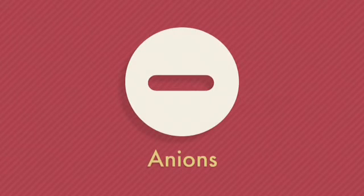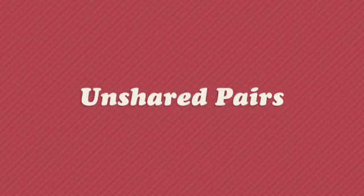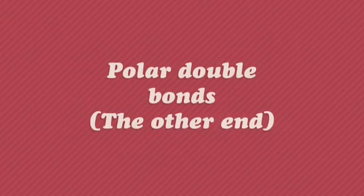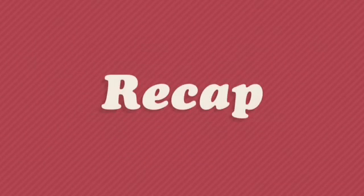On the other side of the coin, we have the Lewis bases. Which molecules can be bases? Any anion can be a Lewis base because they have extra electrons to spare. A Lewis base can be any atom with unshared pairs in their valence electron shell, any molecule that has a double bond, and the other end of a polar bond.